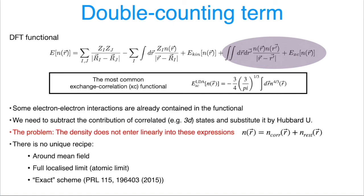Why do we need double-counting? In our DFT functional, we already have electron-electron interactions taken into account in some way. But now we say that for a selected set of orbitals we would like to treat electron-electron interactions differently, using the Hubbard U term. So we have to subtract the contribution of these correlated orbitals — such as transition metal d states — from the original functional. The problem is that the density doesn't enter linearly in these expressions, so we cannot simply disentangle contributions from non-correlated and correlated orbitals.